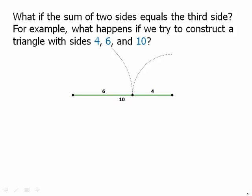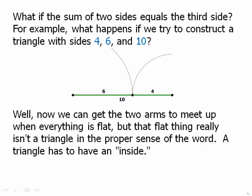Well, you see the problem here. I mean, yes, we can get the side of 6 and the side of 4 to connect up with each other. But the problem is everything is flat. And what we have, there's not really a geometric word for it, so I'm going to call it a flat thing. That flat thing is not a triangle.